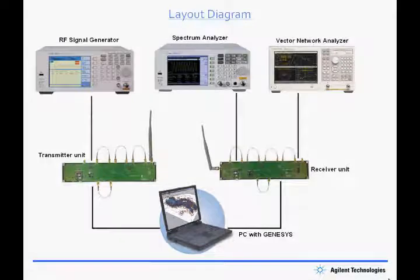Let me show you a layout diagram of the setup of these experiments. The equipment starts with an N9310A RF signal generator, an N9320B RF spectrum analyzer, and an E5061A vector network analyzer. There's a transmitter and receiver unit and Genesis software on the PC.